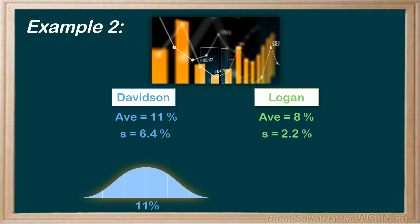The Logan strategy curve, on the other hand, is centered at 8% but is tighter. It's taller and narrow. The majority of the investors saw results quite close to the 8% average, a nice, consistent outcome.